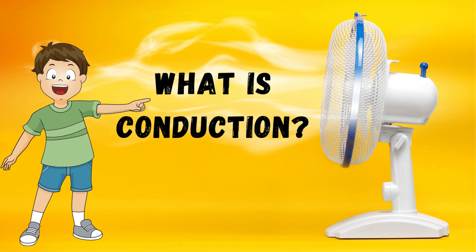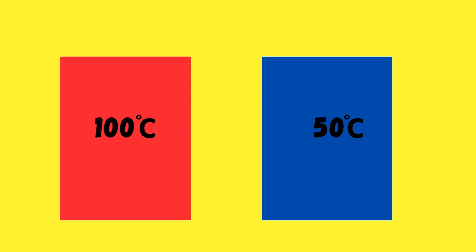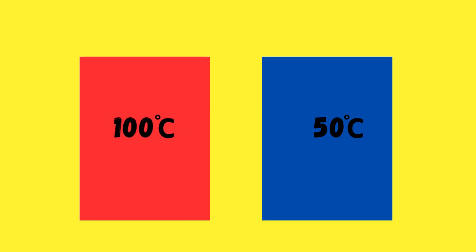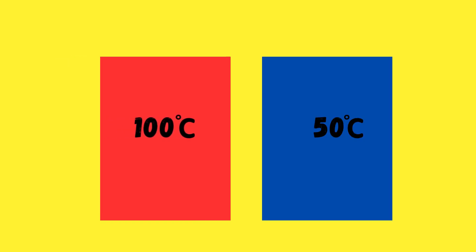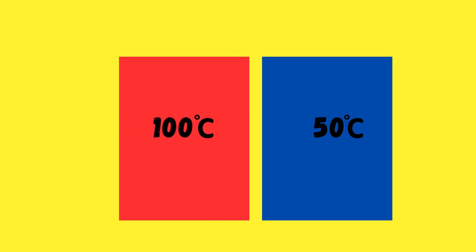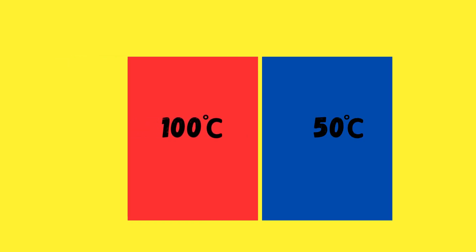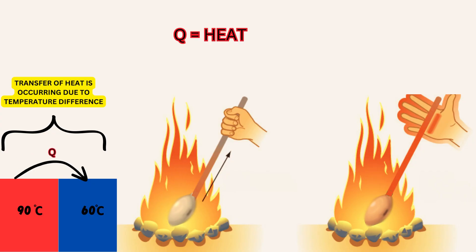Friends, let's start with what conduction is. Conduction is the transfer of heat through direct contact between objects. Imagine that you are holding one hand of a metal spoon over a flame. As you do, heat will be conducted from the flame to the spoon's handle, making it hot.